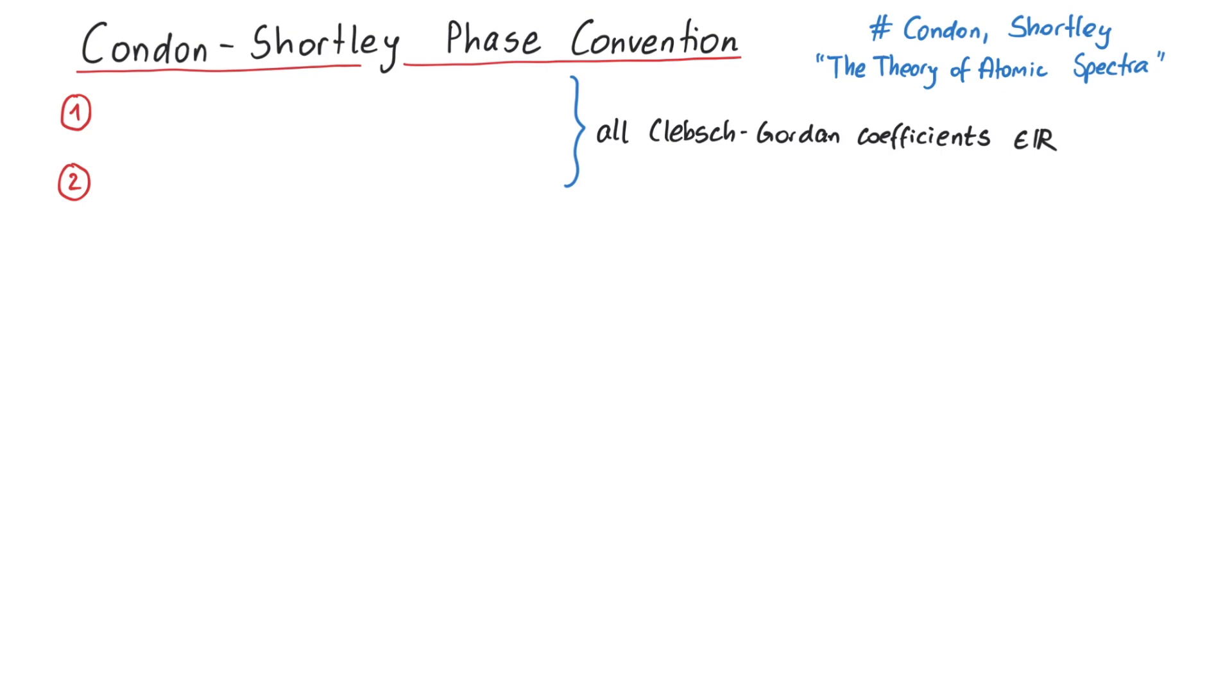Let's start by listing the two statements of the convention. The first one states that matrix elements of ladder operators are purely real numbers. The second one states that for any given j1, j2, and uppercase J, the following Clebsch-Gordan coefficient is also real and positive.